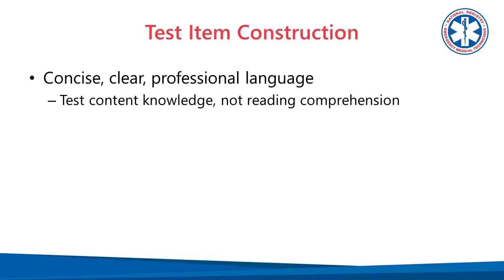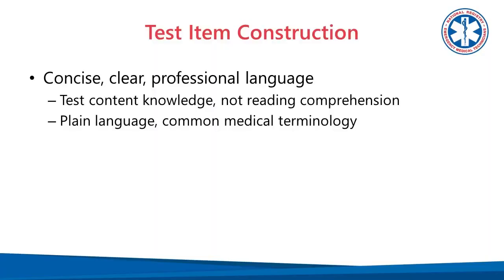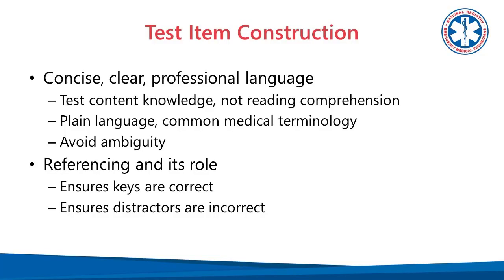Now that we understand the parts of a properly written test item, let's talk about how to put them together. Make sure your stem and options use concise, clear, and professional language — treat it as if this is a multi-agency scene where everyone uses plain language or common medical terminology. Avoid ambiguity and don't present too much information to the candidate, because you want to test their content knowledge, not their reading comprehension. Here at the National Registry, we also reference our exam items, meaning we have proof that the key is correct and the distractors are incorrect. Now let's get into some practice items.